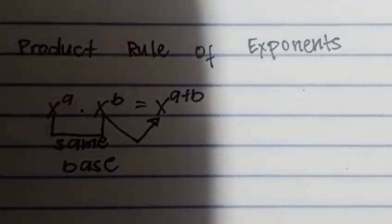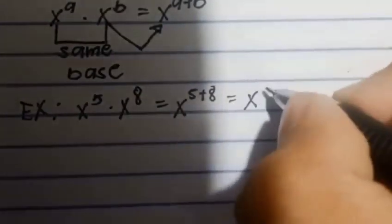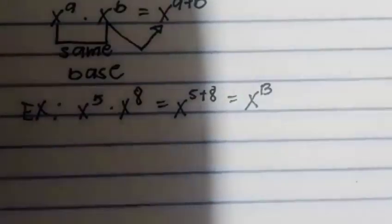Example number 2: x to the 5 times x to the 8 equals, same base so copy the base, 5 plus 8. Copy the base again, then 5 plus 8 equals 13. So x to the 13.